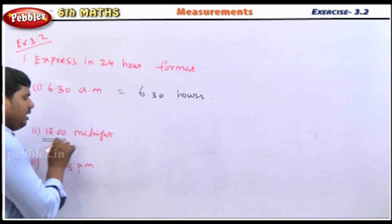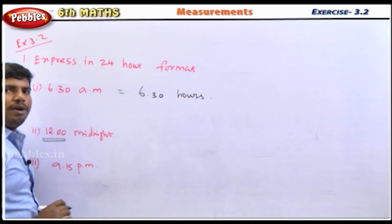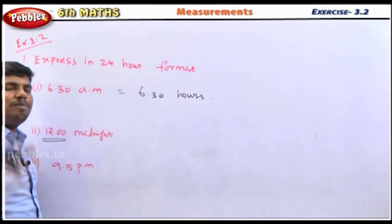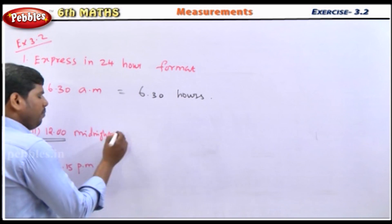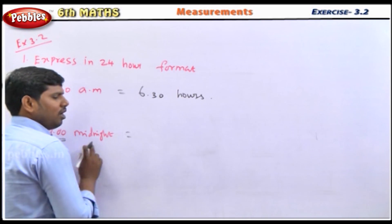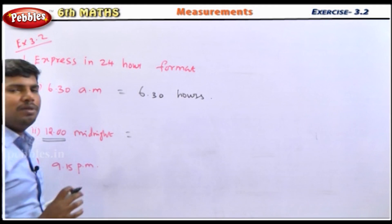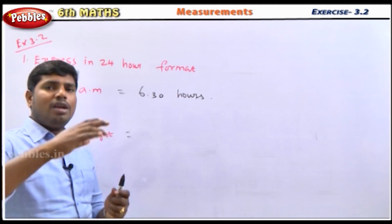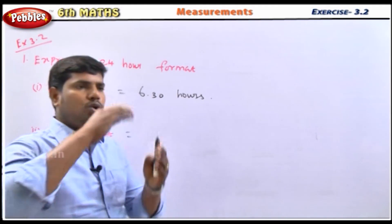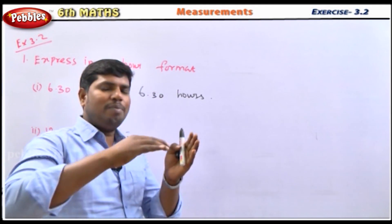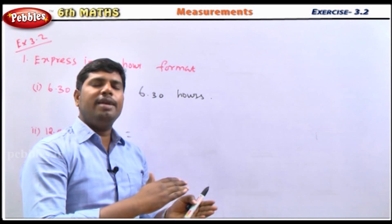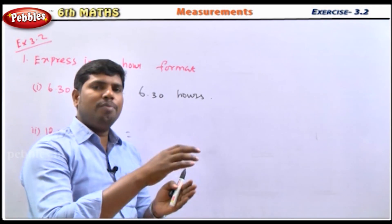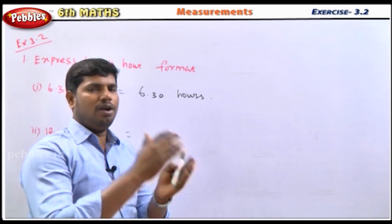If you observe: 12 midnight equals 0 hours. Normal time is easy to convert. 12 o'clock midnight is called 0 hours. 12 o'clock is a full rotation. There are 23 hours for 11 PM, and 22 hours for 10 PM.